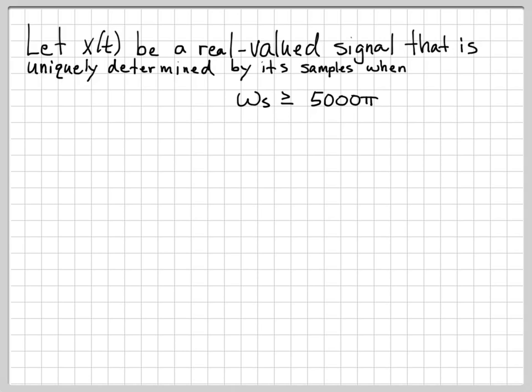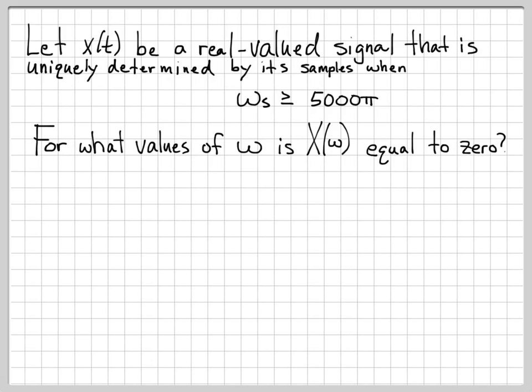So ωs here is the sampling rate. The question that we're going to ask ourselves is: for what values of ω is X(ω), the Fourier transform of the signal x(t), equal to 0?